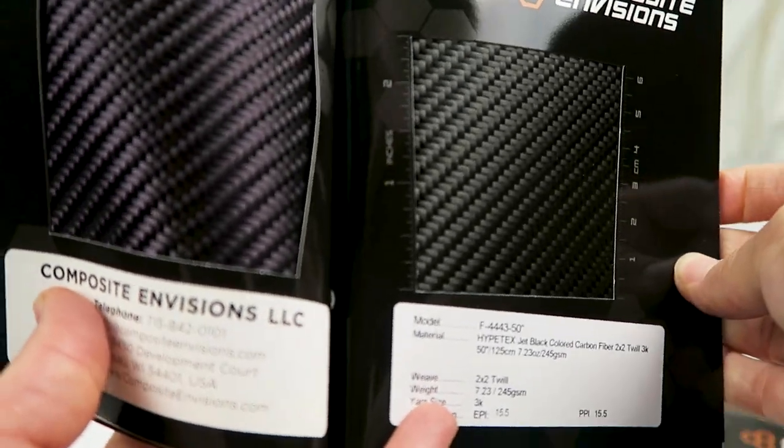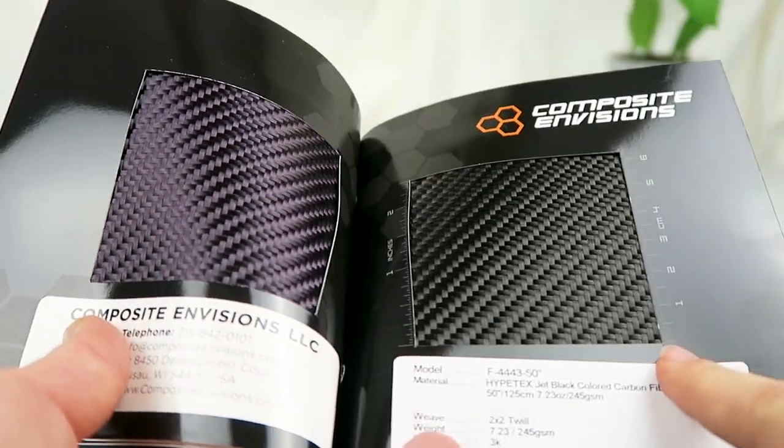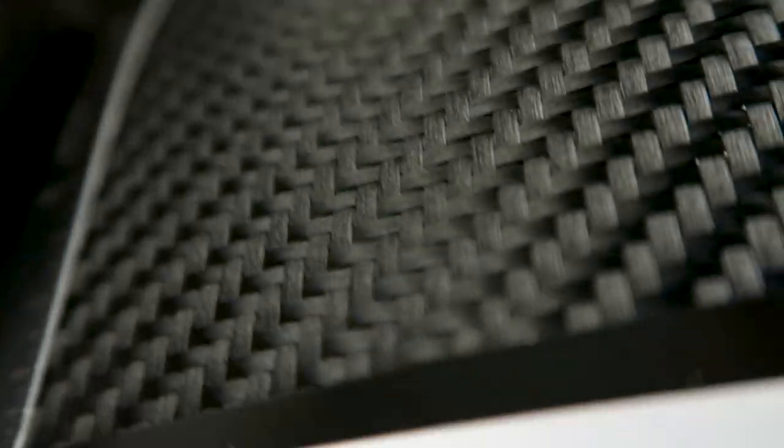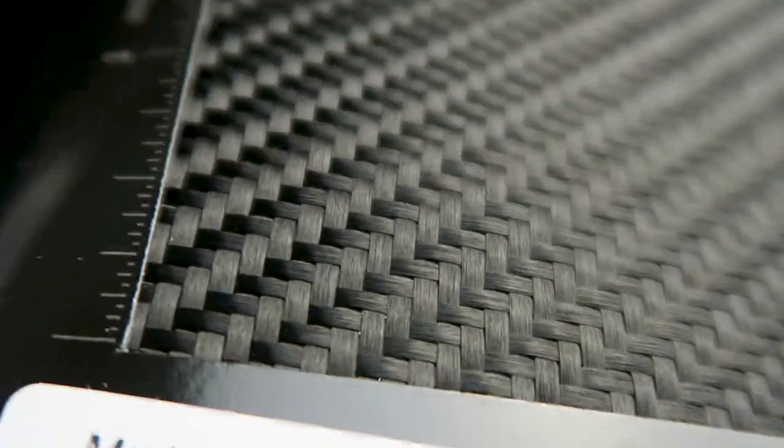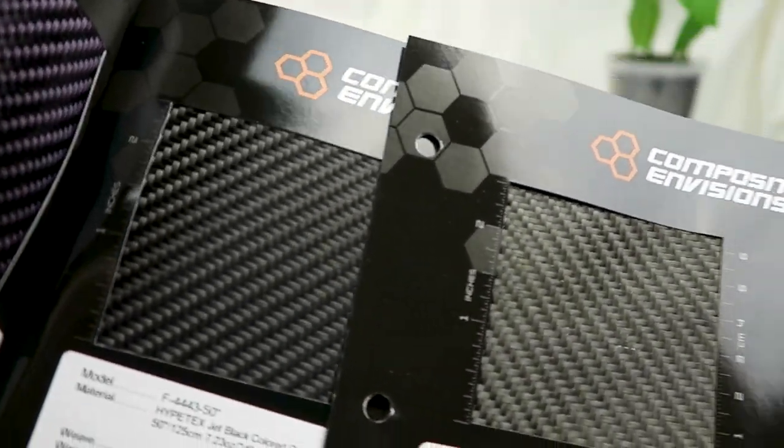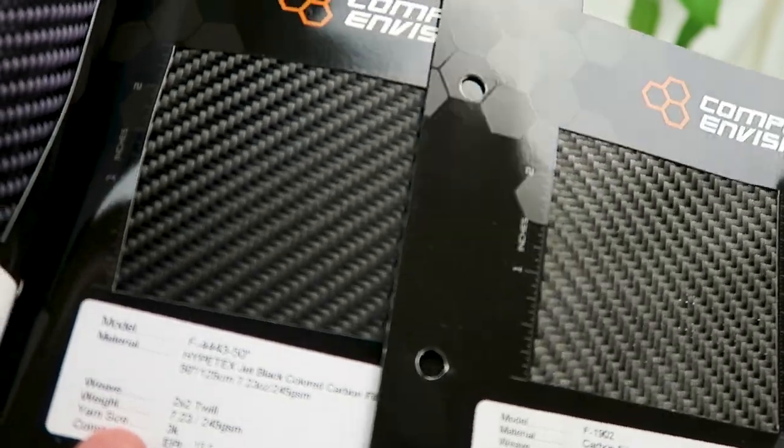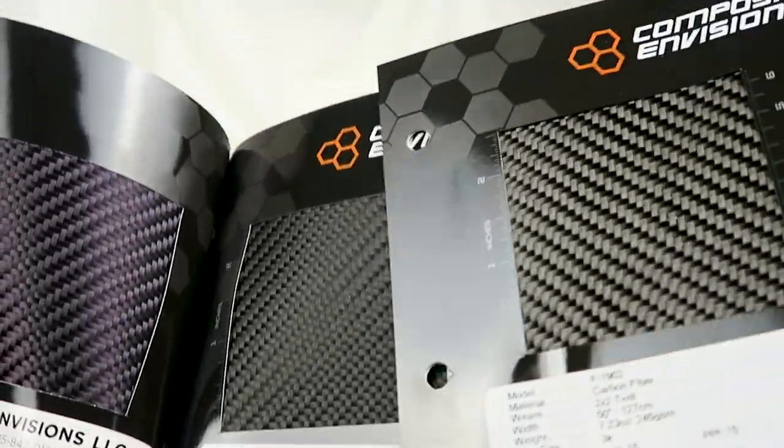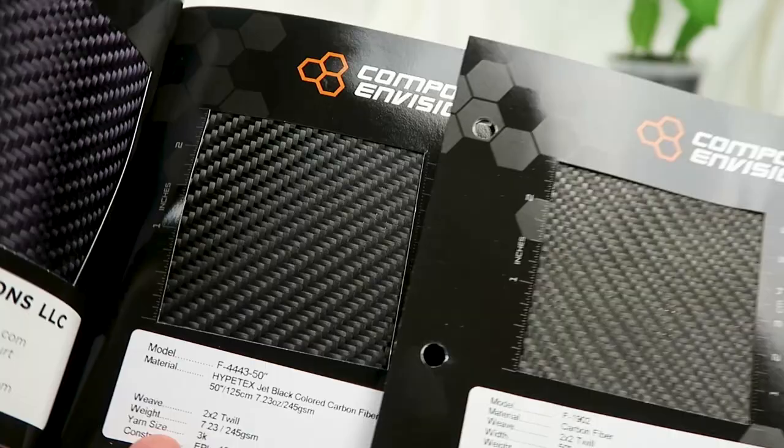Now this sample threw me for a loop because it just looks like carbon fiber, but it's jet black. It has been coated with something. When you compare it to plain carbon fiber, it does have a bit of a more matte effect. It loses some of that three-dimensionality, but we'll see later how that looks once it's cured in resin.